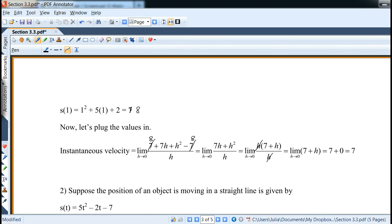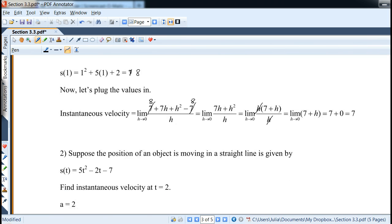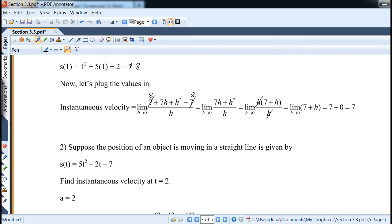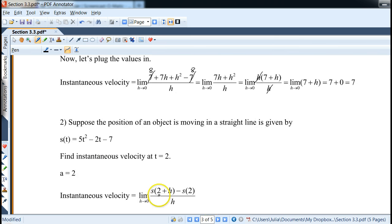Okay, now here is another position question, which is very similar. And this time, we want to compute instantaneous velocity at t equals 2. So the idea is the same, a is 2. So we have the limit as h goes to 0 of s(2 + h) minus s(2) over h.